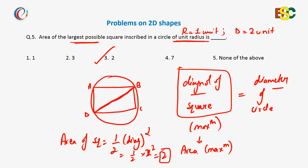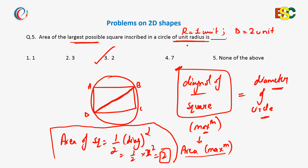To summarize: we need the area of the largest square inscribed in a circle of unit radius. Unit radius means r = 1, so diameter = 2. The area of the square is maximum when the diagonal is maximum, and the diagonal is maximum when it equals the diameter. Using the formula: area = half into diagonal squared = half into 2 squared = 2 square units.